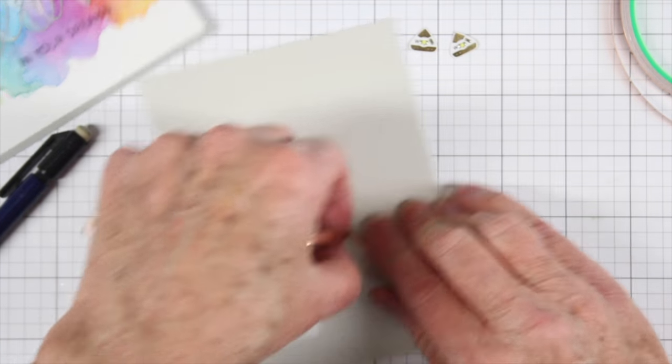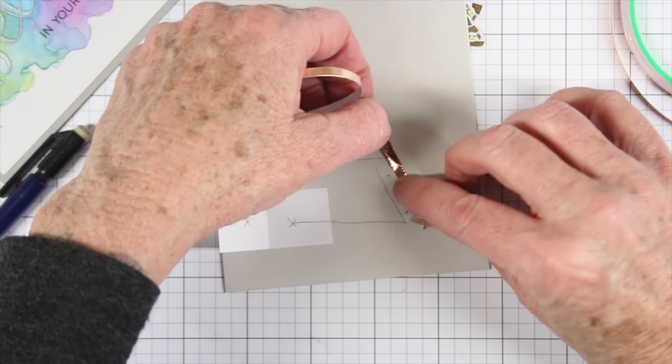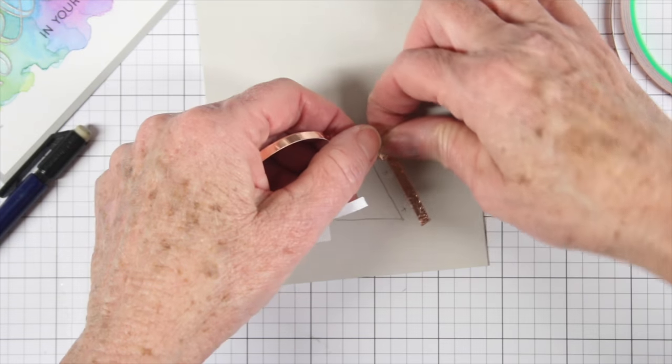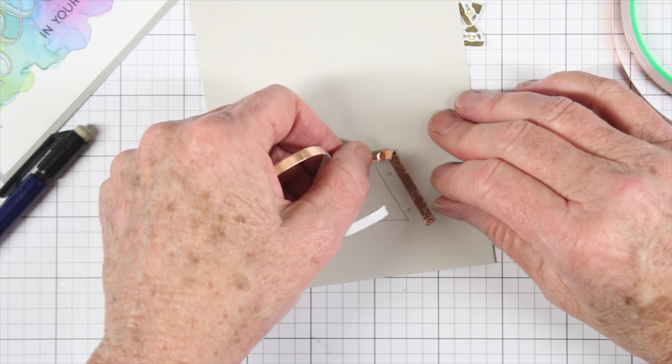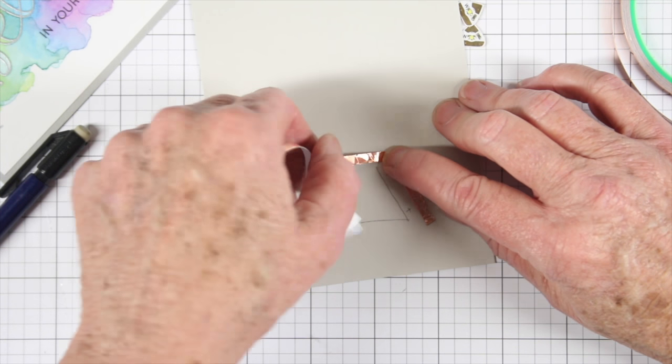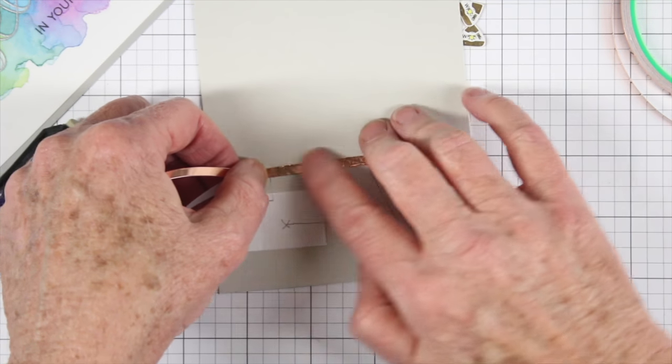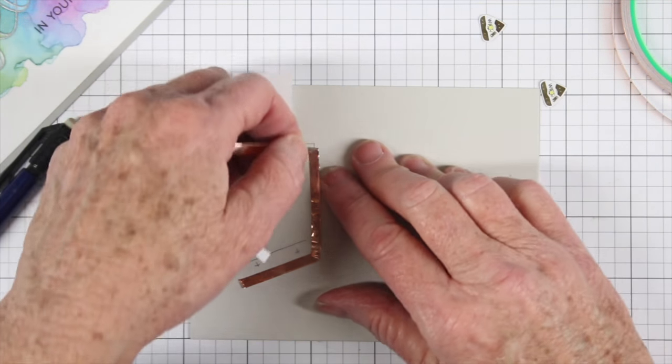So by taking the backing off of that copper tape I am going to follow those lines that I have penciled out and tape that down and fold over the corners when you need to.